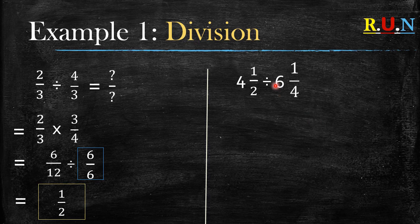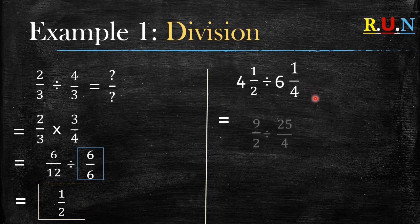Let's look at another example. This example involves mixed numbers, so you can't start dividing, neither can you start changing the division sign to multiplication because there are mixed numbers. What you need to do is change all these mixed numbers into improper fractions.